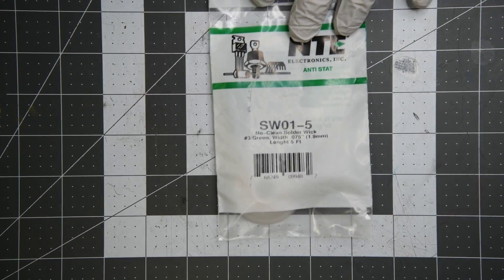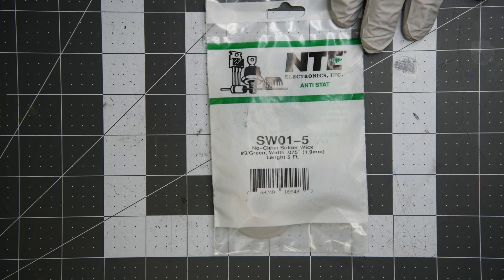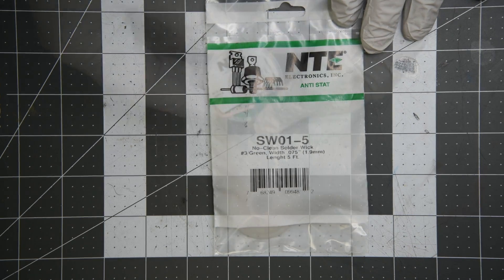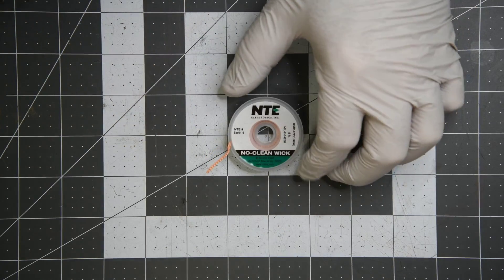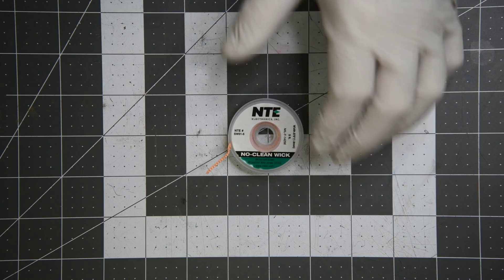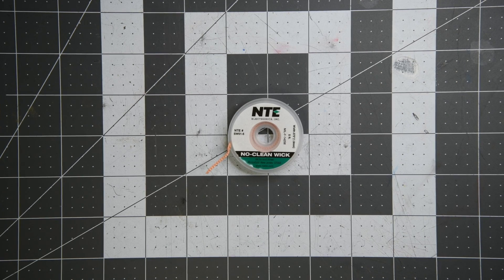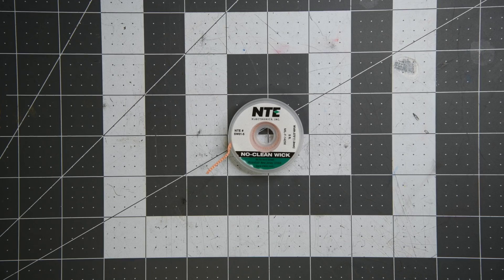Here's the NTE brand. It is made in the U.S. The wick is only .075 inches wide, but I went ahead and ordered it. I've used NTE solder wick in the past and it's been fine. I don't think I've used a no-clean before. This is a 5-foot spool at $1.26 a foot.